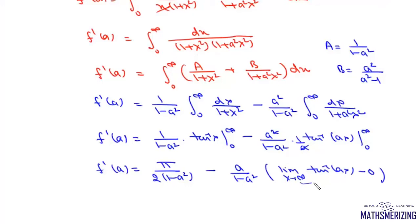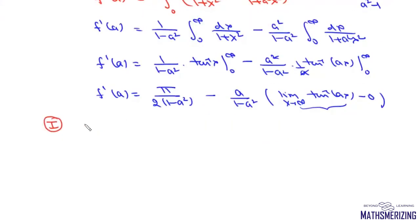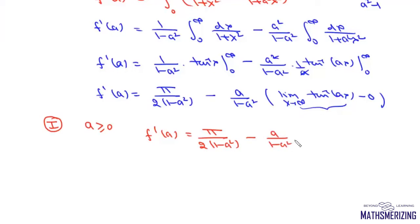The limit of tan⁻¹(ax) as x→∞ depends on a: if a is positive it equals +π/2, and if a is negative it equals −π/2. So we consider two cases. Case 1: when a is greater than or equal to zero. In this case, f'(a) = π/(2(1−a²)) minus a/(1−a²) · π/2, giving f'(a) = π/2 · (1−a)/(1−a²).